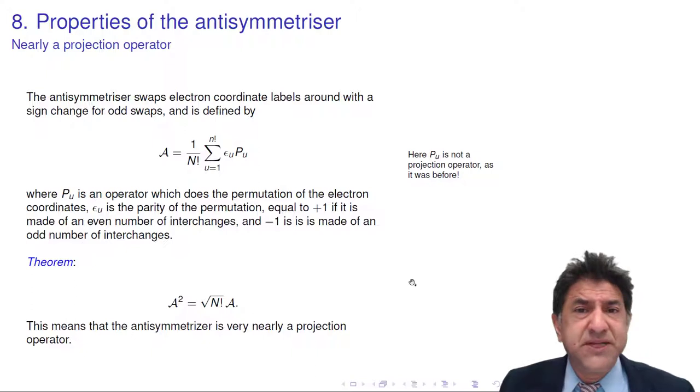A few lectures ago we talked about the Hartree-Fock wave function, and that is a Hartree product of orbitals. Each orbital is a function of one electron's coordinates.